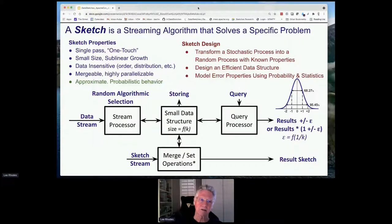The sketches are data insensitive, meaning it doesn't matter the order that data appears or the distribution. The real power comes because they're mergeable and highly parallelizable. By definition, they're approximate, so you get approximate answers but with well-understood error properties. You get a good idea, even before the fact as well as after, of how accurate your sketch is in the results.